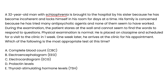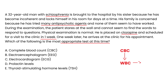A 32-year-old man with schizophrenia is brought to the hospital by his sister because he has become incoherent and locks himself in his room for days at a time. His family is concerned because he has tried many antipsychotic agents and none of them have worked. He is placed on clozapine and scheduled for a clinic visit in one week. Which of the following is the most appropriate test at this time? The answer is a CBC, which shows the white blood cell count and neutrophil count — important to monitor because a small percentage of people on clozapine can develop agranulocytosis, a decreased white blood cell count, particularly neutrophils.